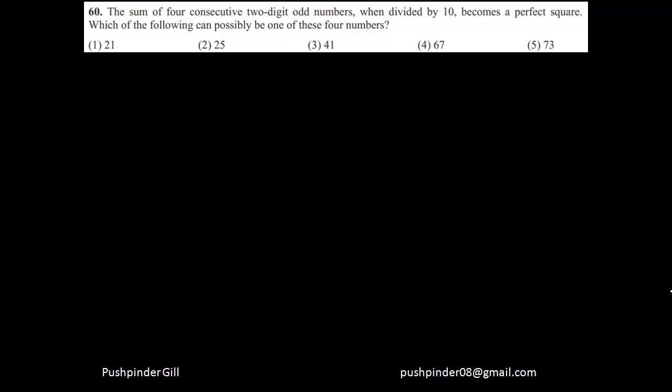So it's always good to use the options in such questions. However, in this question, he's asking which can be one of the four numbers, which means each option gives you four possible different scenarios. You can assume the first option and take the numbers to be 21, 23, 27, 29, or 19, 21, 23, 25 — so each option gives you four possibilities, meaning four or five options give you 20 possibilities. So that's not the right approach; you should work the question a little bit first, and then use the options.